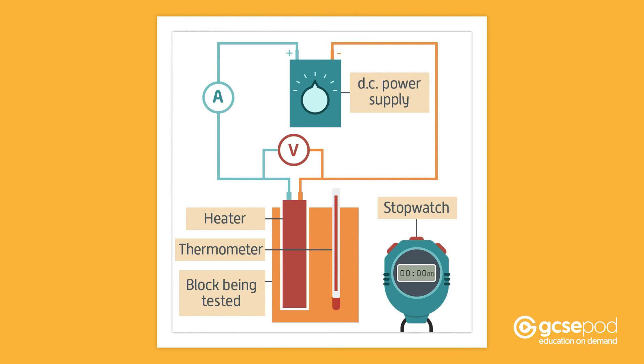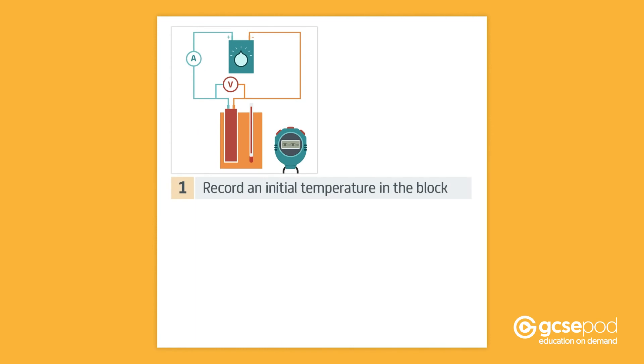you need to take the following steps. 1. Take and record an initial reading of the temperature in the block. 2. Set the power supply to deliver around 8 to 10 volts direct current supply. 3. Switch on the power supply and start the stopwatch.